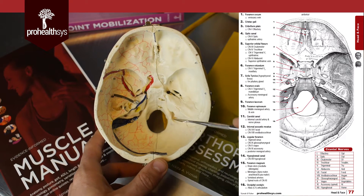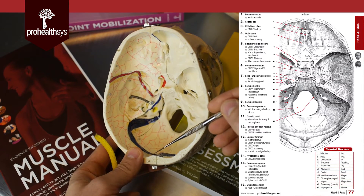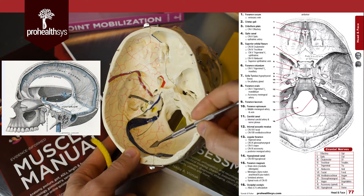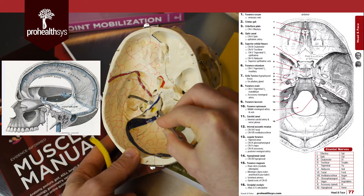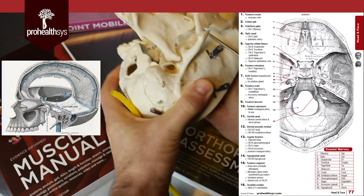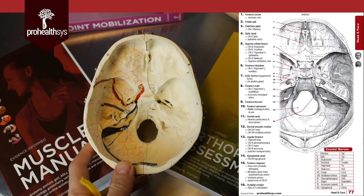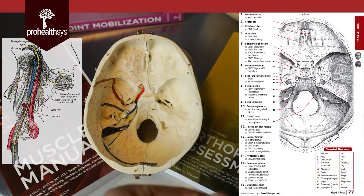The jugular foramen is a very important structure. The sigmoid sinus comes down from the confluence of sinuses, passes through the transverse sinus and sigmoid sinus, and then exits through the jugular foramen. Key structures running through the jugular foramen include the sigmoid sinus, the glossopharyngeal nerve (CN IX), the vagus nerve (CN X), the accessory nerve (CN XI, also known as spinal accessory), and the posterior meningeal artery.